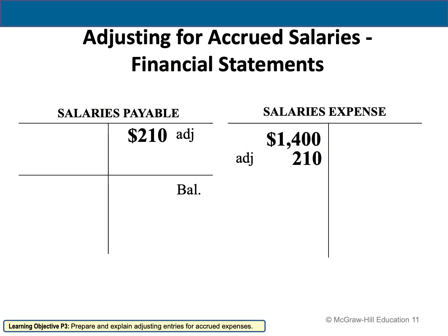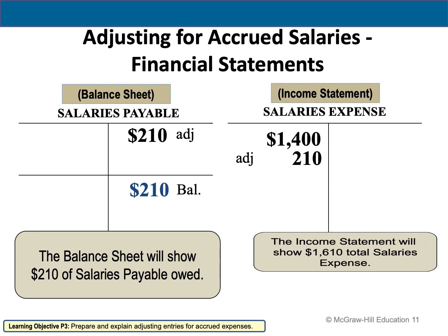Looking at the T-accounts: salaries payable is a liability. I recorded $210 as a salary expense but did not pay it yet, so I record it as salaries payable because I have a liability to pay that. My balance of salaries payable is $210, and because it's a liability, I record it on the balance sheet. Salaries expense goes in the income statement because expenses are recorded in the income statement.